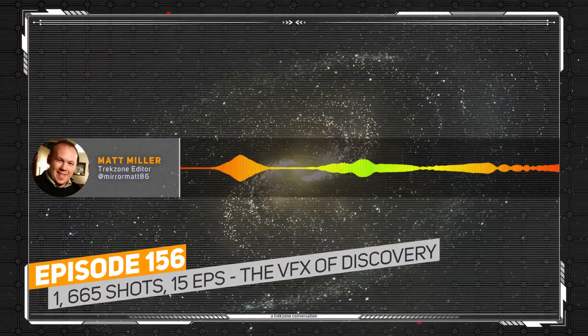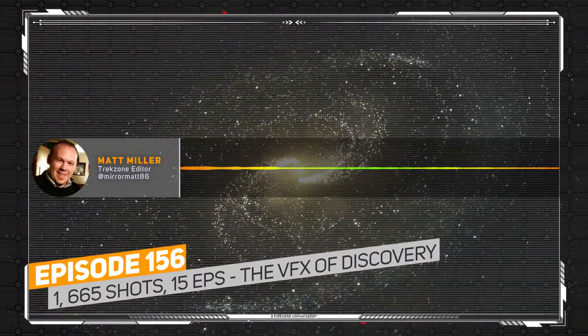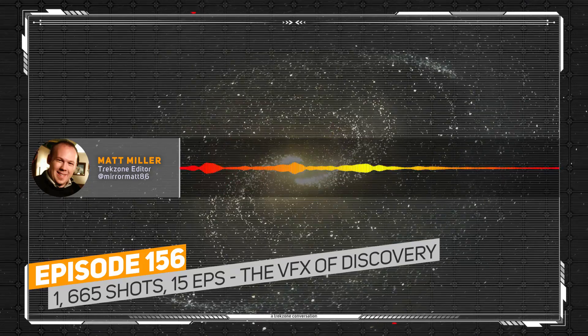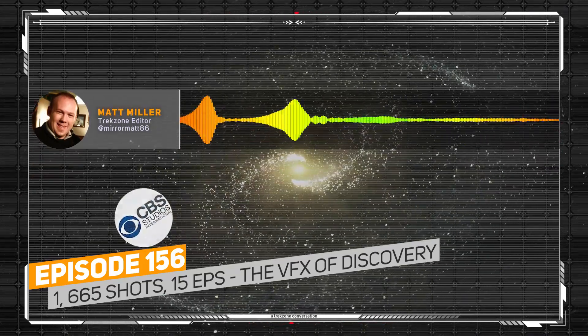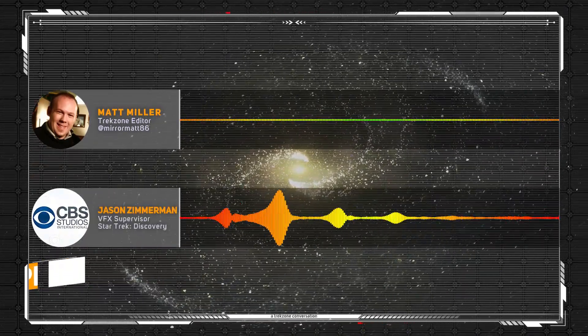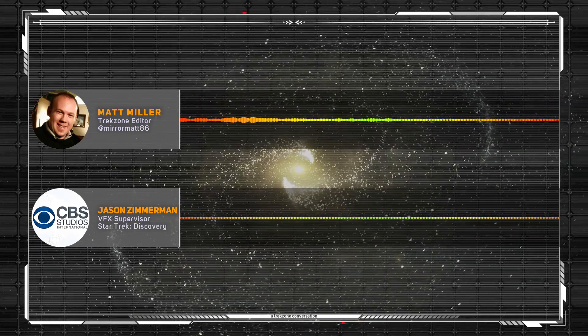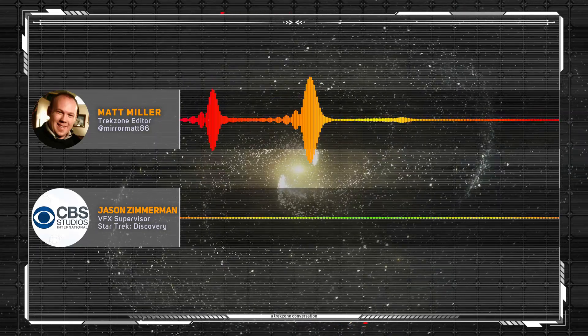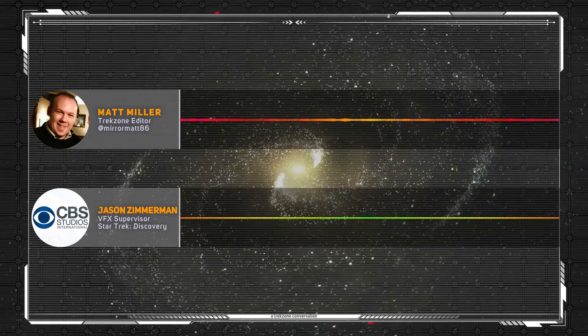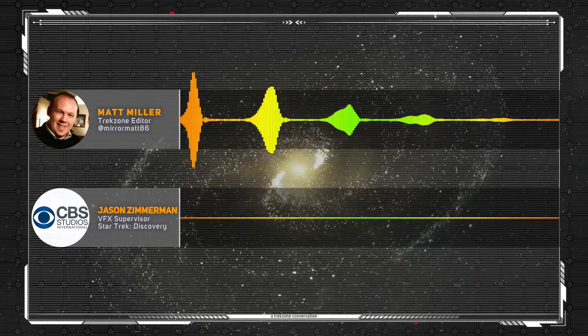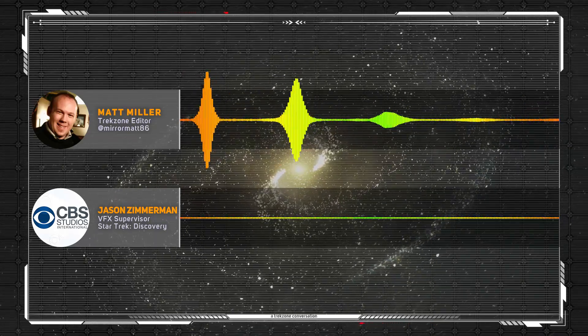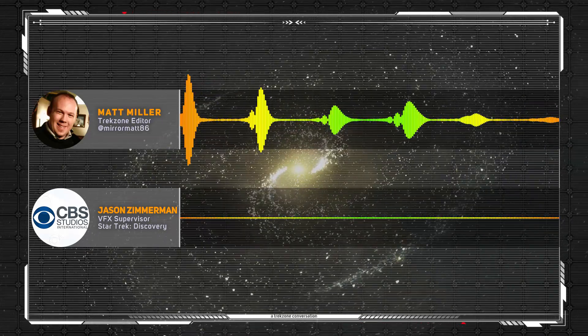Welcome to the show. Today I'm lucky enough to be joined by Discovery's visual effects supervisor, Jason Zimmerman. Welcome to Trekzone, sir. Thank you for having me, looking forward to it. Now, I was reading online that there were 1,665 effects shots in the 15-episode second season. Obviously that doesn't all drop on you at once, but how do you and the team tackle something so massive as a sci-fi Star Trek show?